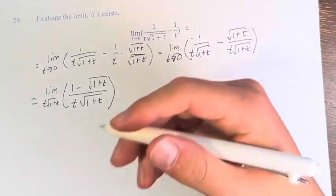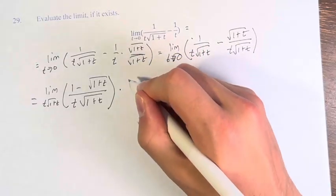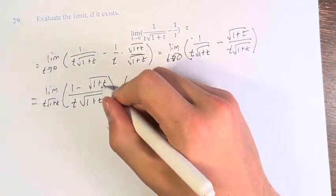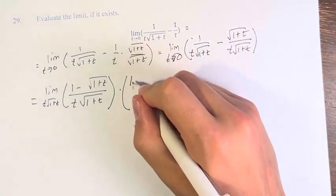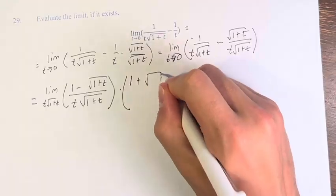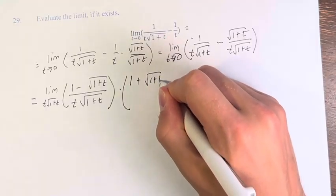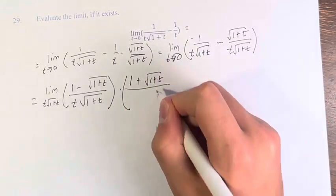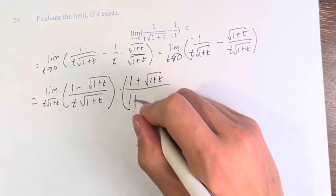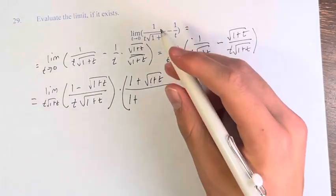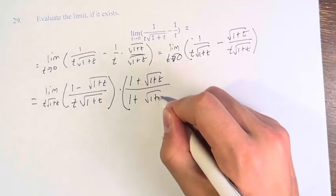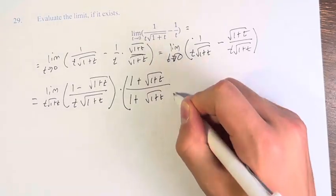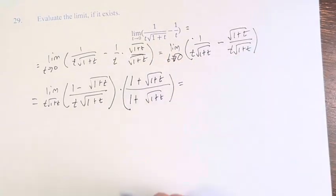Doing that, we have 1 minus the square root of 1 plus t in the numerator, so we multiply this by 1 plus the square root of 1 plus t. Of course, we have to multiply the denominator by the same.